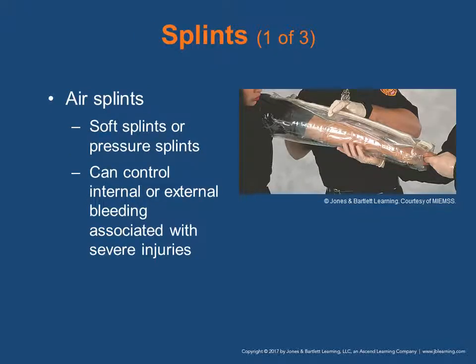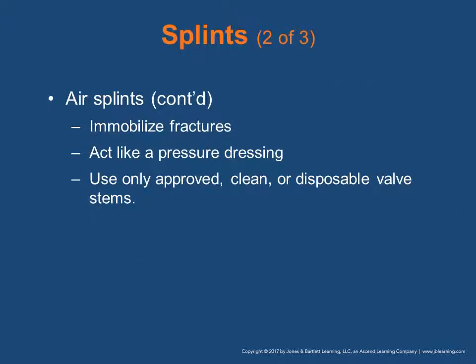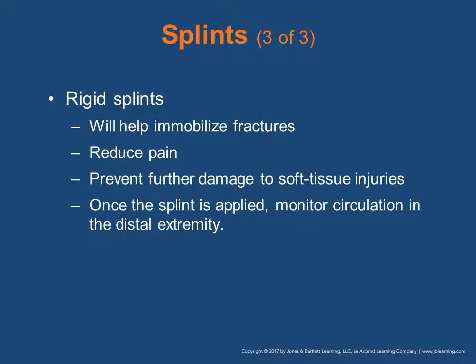Air splints are soft pressure splints that can be applied over an injury or fracture and can control internal or external bleeding associated with severe injury. Air splints immobilize the fracture and act like a pressure dressing — use only approved, clean, or disposable valve stems. Rigid splints help immobilize fractures, reduce pain, decrease friction of bone ends, and prevent further damage to soft tissues during transport. Once the splint is applied, monitor circulation in the distal extremity.